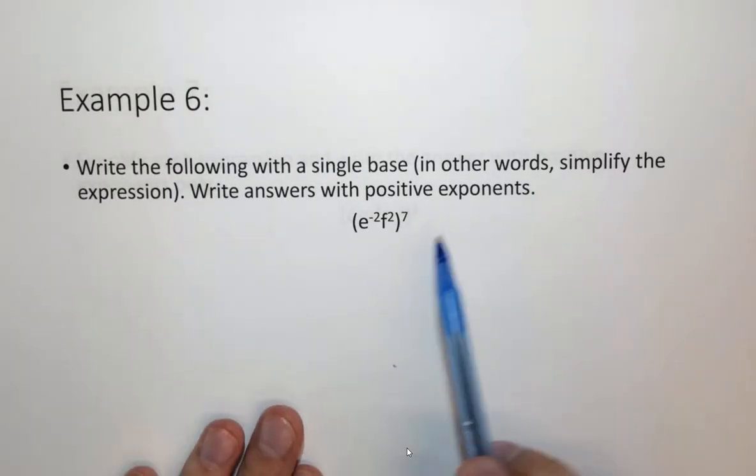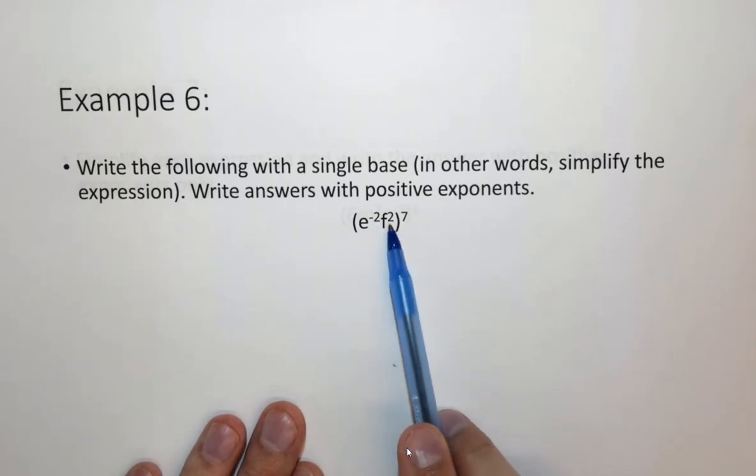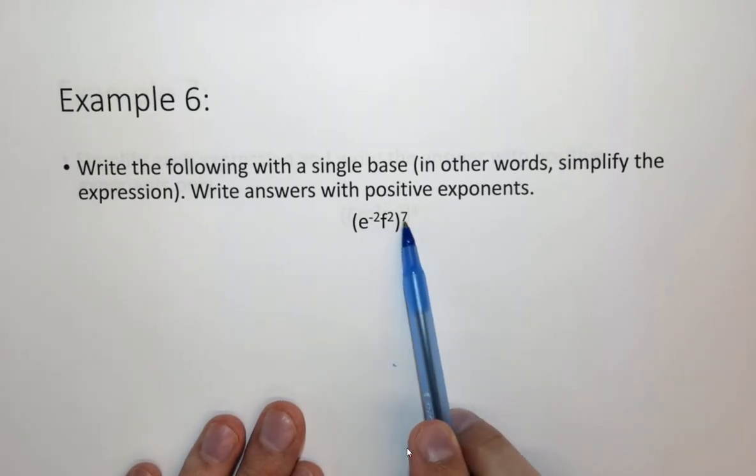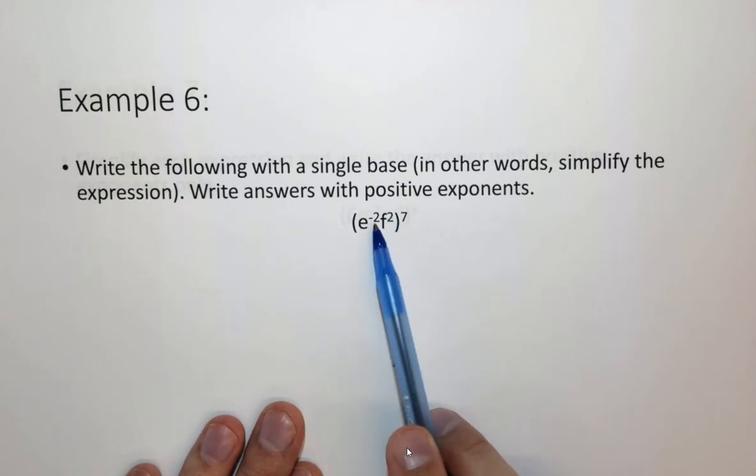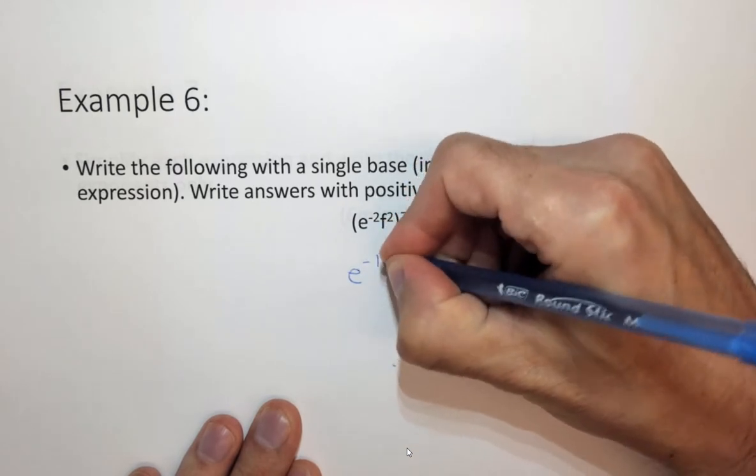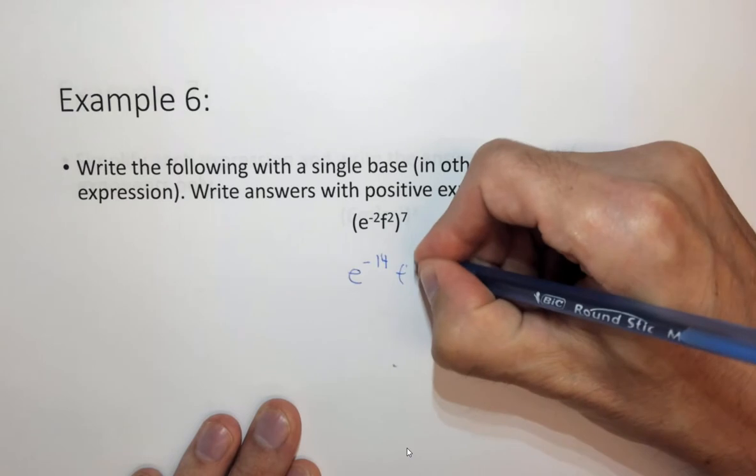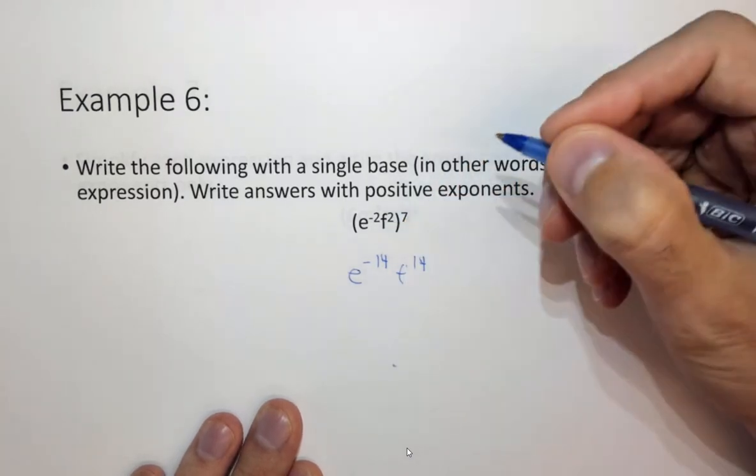Let's look at combining these two ideas. Well here we have e to the minus 2 f to the 2 all raised to the 7. We need to distribute this so we need to do minus 2 times 7 and 2 times 7. So this is equal to e to the minus 14 minus 2 times 7 times f to the 14 which is 2 times 7.